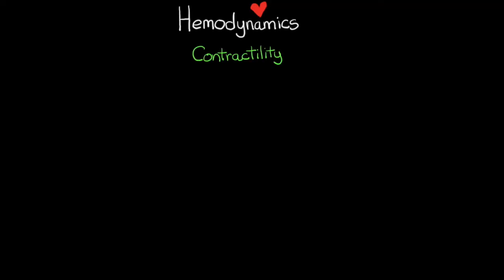Starting with contractility — this is simply the squeeze the heart is able to produce, the force of contraction with each beat. Increased contractility leads to increased stroke volume: the more squeeze, the more blood ejected per contraction. However, increased contractility also leads to increased myocardial oxygen demand, requiring more energy and oxygen.